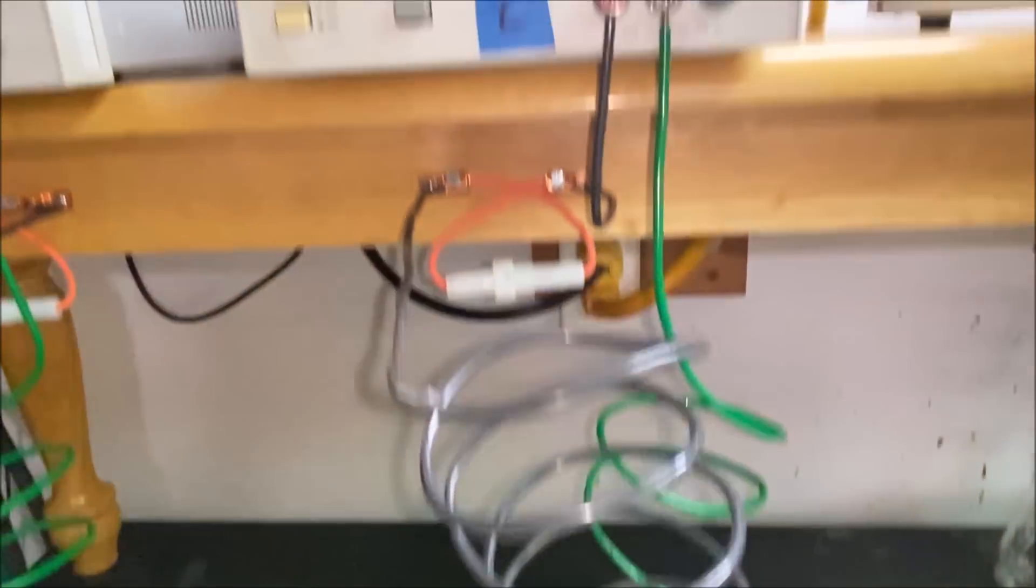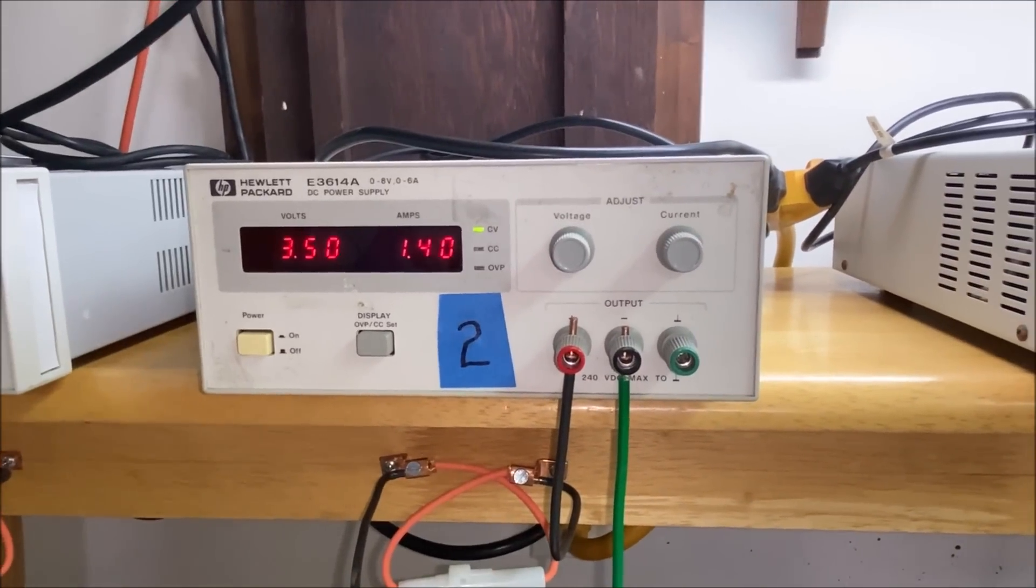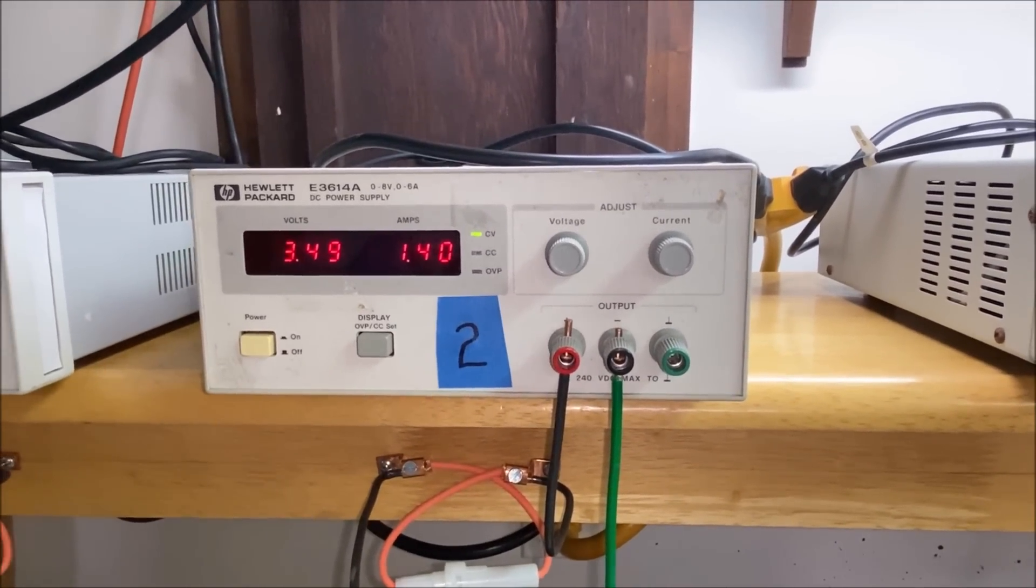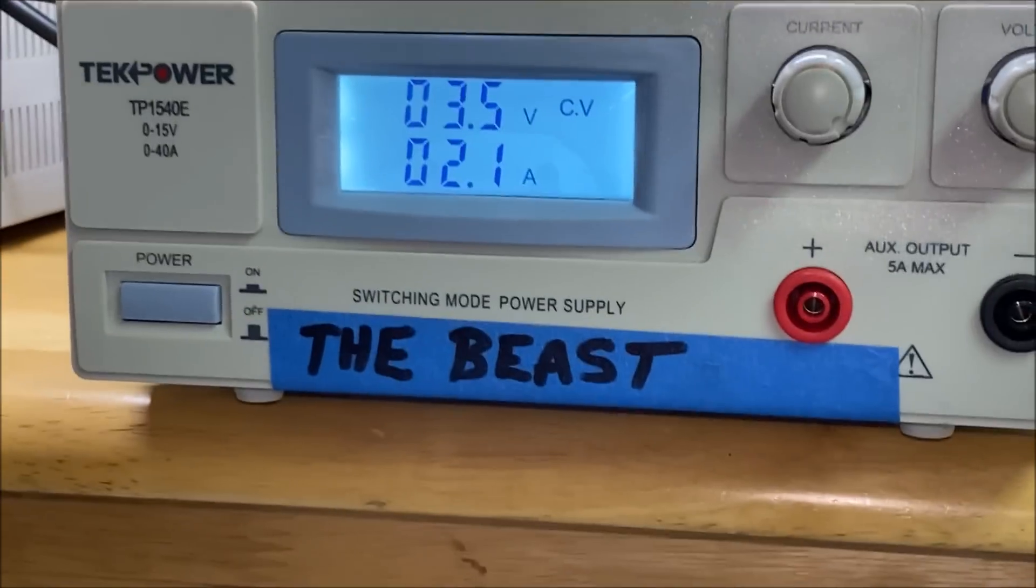And then here's our current flow after that little bit of maintenance. Current flow in the beast is 2.1 amps.